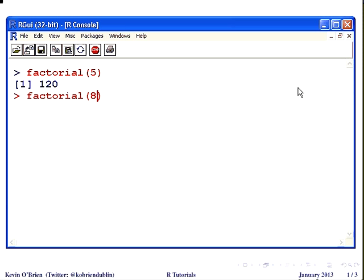Factorial of let's say 8, 40,320. They get very big very fast. For example I'm going to type in the factorial of 20. I'm going to get a huge number now. Absolutely massive number. They need scientific notation for this.